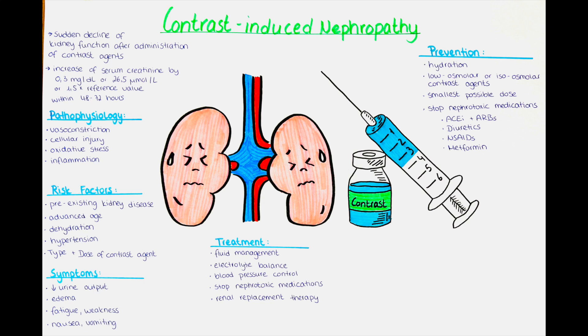Administering the smallest possible dose of contrast agent necessary for accurate imaging is also important. Medications that affect kidney function increase the risk of contrast-induced nephropathy. NSAIDs such as ibuprofen, naproxen or diclofenac can cause renal vasoconstriction and may need to be temporarily stopped before contrast-enhanced procedures. ACE inhibitors and angiotensin II receptor blockers, used to treat high blood pressure and heart conditions, can reduce renal blood flow and have been associated with an increased risk of contrast-induced nephropathy.